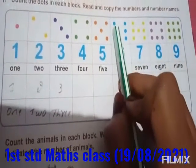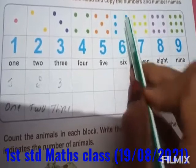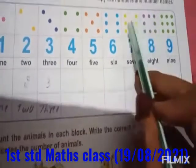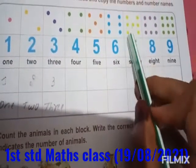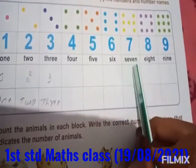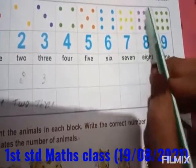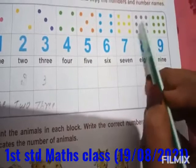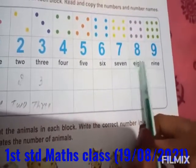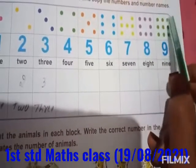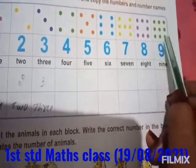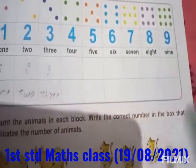Then here in this box: 1, 2, 3, 4, 5, 6. SIX, 6. Then: 1, 2, 3, 4, 5, 6, 7. SEVEN, 7. Then: 1, 2, 3, 4, 5, 6, 7, 8. EIGHT, 8. Then: 1, 2, 3, 4, 5, 6, 7, 8, 9. NINE, 9.